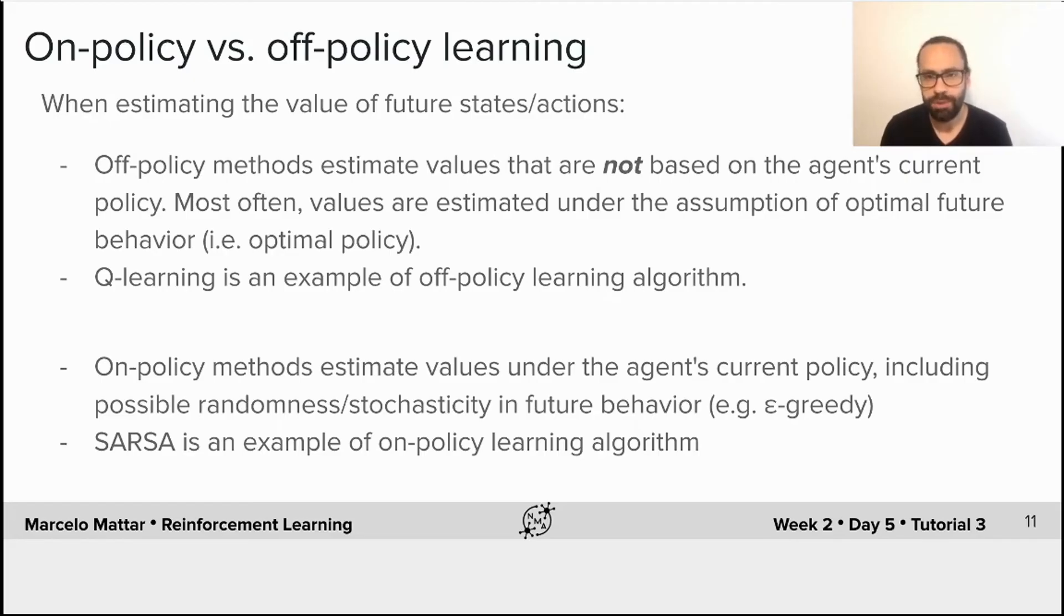In fact, most off-policy methods often estimate the value of the next state under the assumption that the agent will behave optimally, which may not necessarily be the agent's actual policy. So this assumption is what underlies the algorithm we just learned about, Q-learning, which is a classical example of an off-policy method for learning action values.